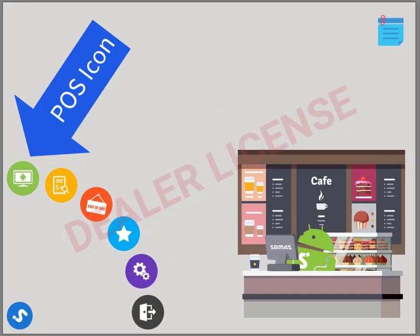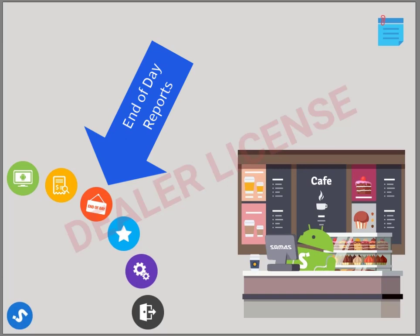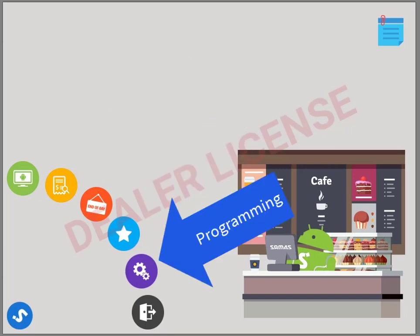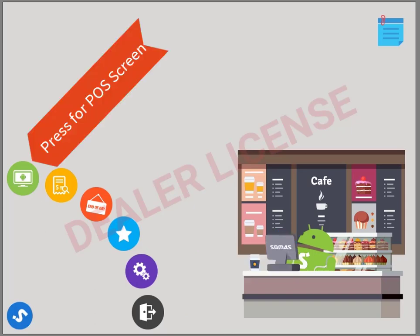Now we're at our icon screen. There's the POS icon, reporting icon, end of day reports icon, favorites icon, the programming icon, and now the exit. First we're going to go into point of sale, so press the POS icon.